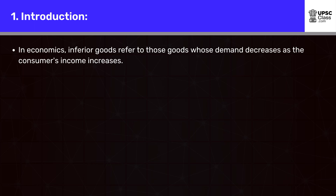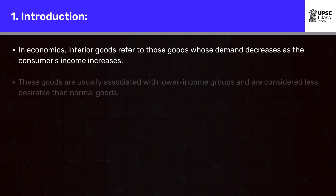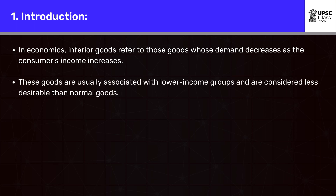In economics, inferior goods refer to those goods whose demand decreases as the consumer's income increases. These goods are usually associated with lower income groups and are considered less desirable than normal goods.